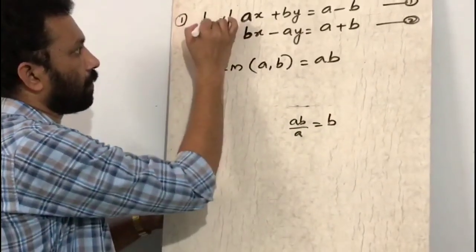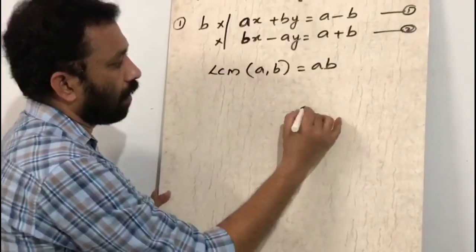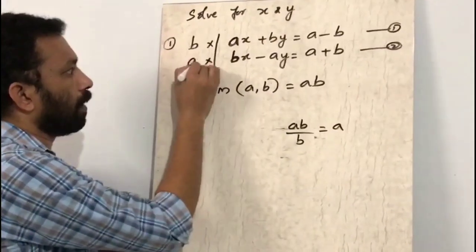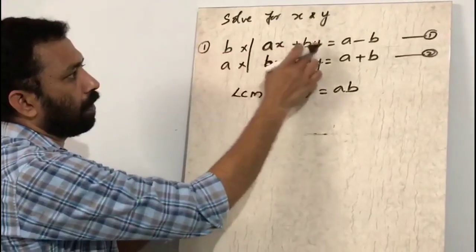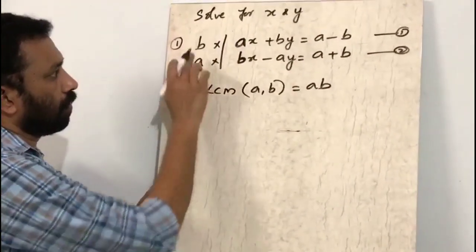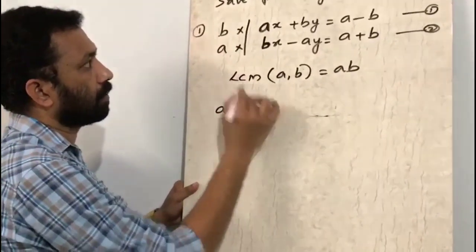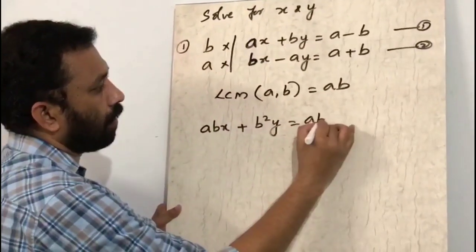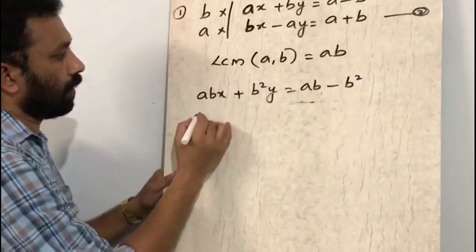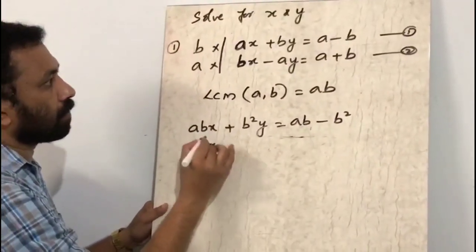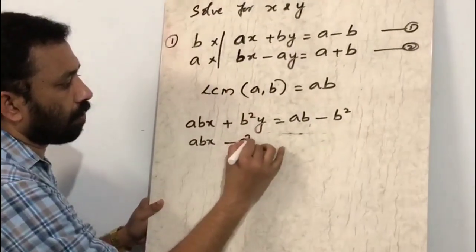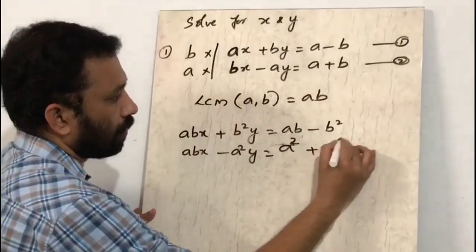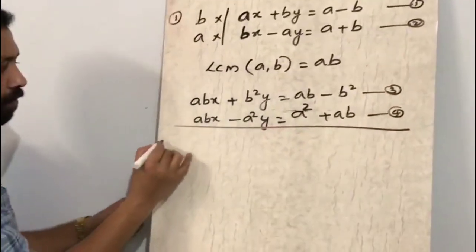We multiply the first equation by b (since ab ÷ a = b) and the second equation by a (since ab ÷ b = a). Multiplying: b × (ax + by) gives abx + b²y = ab - b². Multiplying: a × (bx - ay) gives abx - a²y = a² + ab. These are equations 3 and 4.